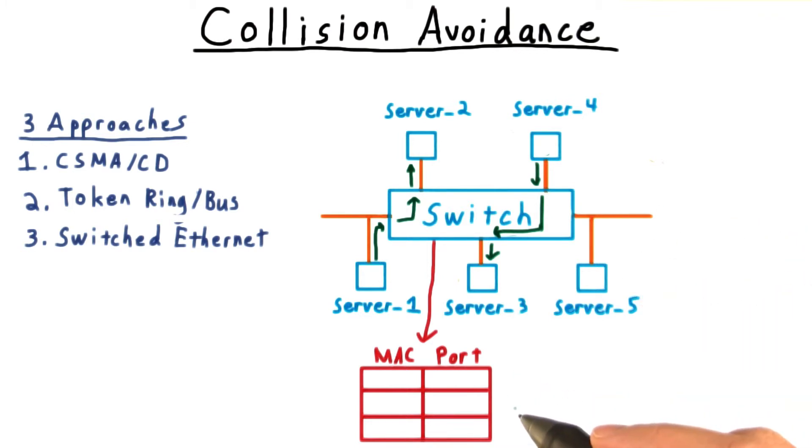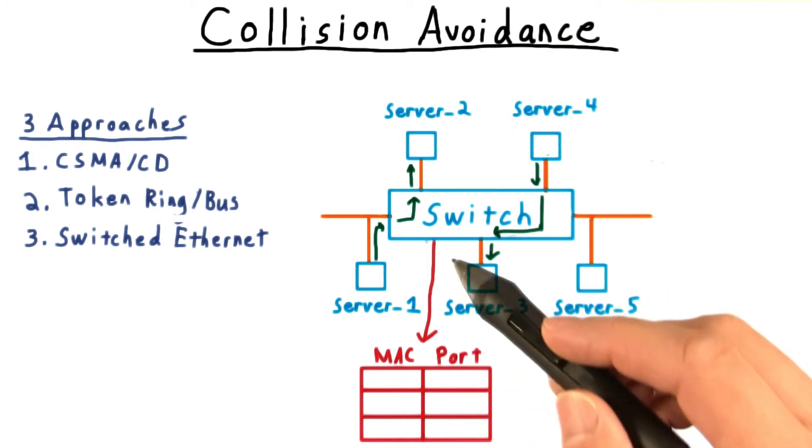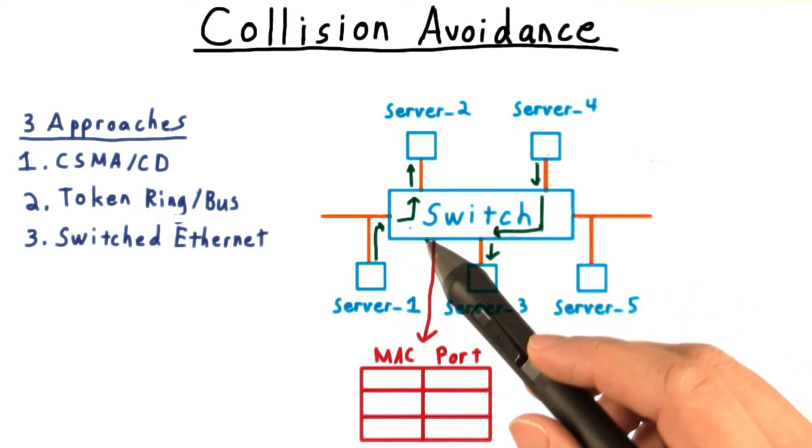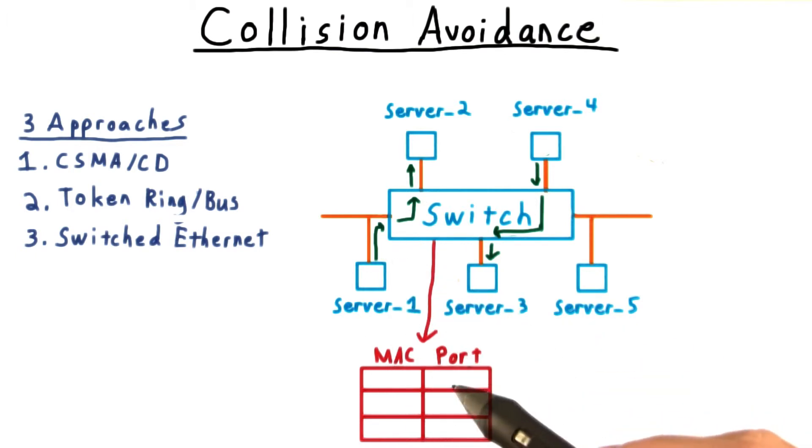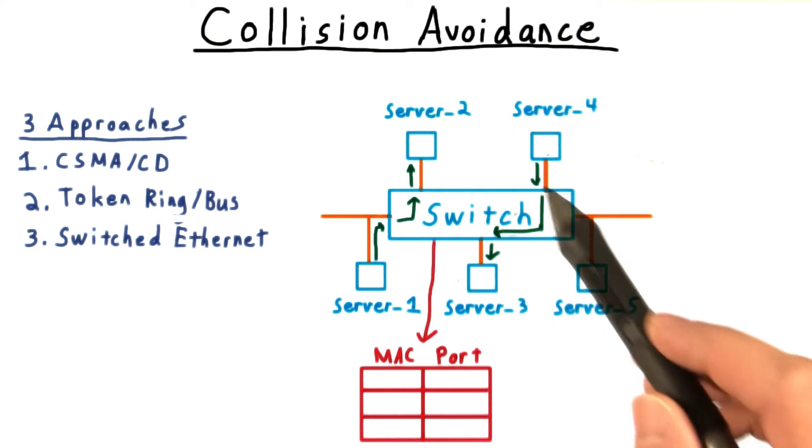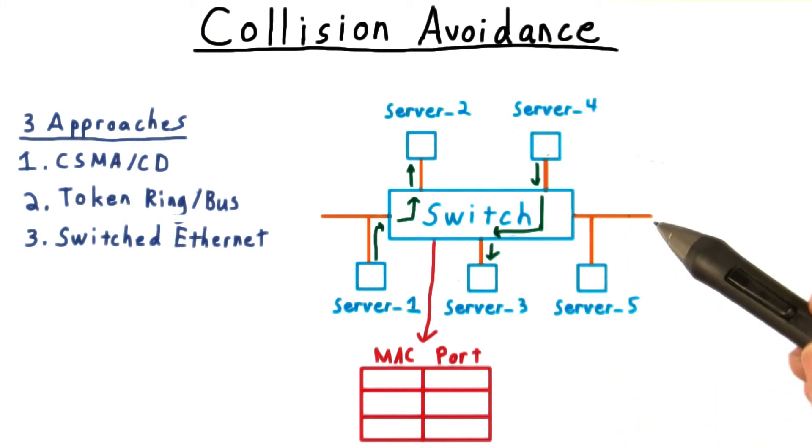Naturally, a switch will need a table mapping MAC addresses to the physical port it should send the frame out to. One convenient way to populate this table is with learning. Whenever a switch sees a frame, it examines the MAC source and puts that MAC address along with the port number in the table. Then to figure out where to send it, it looks in the table, and if it finds the appropriate port, great. If not, then it just broadcasts the ethernet frame to all the nodes.